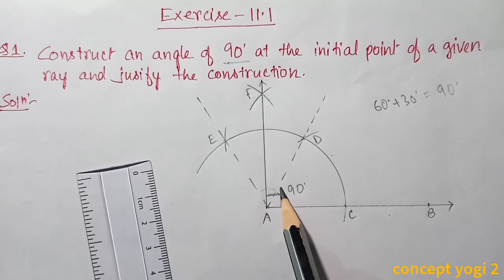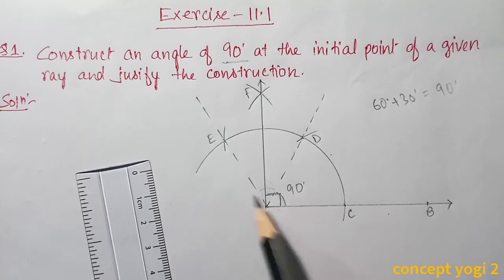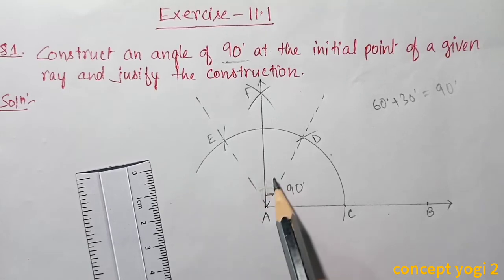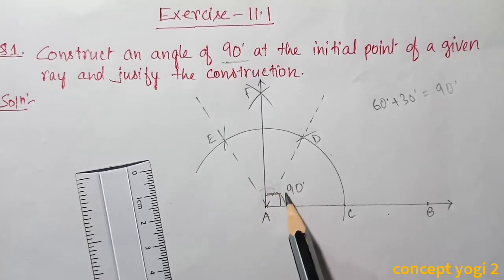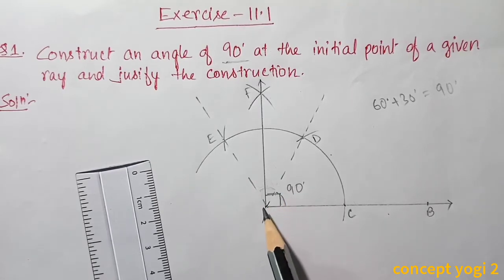This angle FAB is 90 degrees because this part is already 60 degrees and we bisected the remaining angle to get 30 degrees. 60 plus 30 gives us 90 degrees.